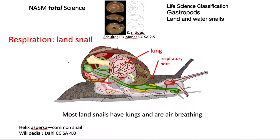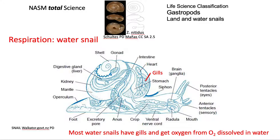For respiration in the land snail, there's a lung and a respiratory pore, and the land snails are air breathing. Some water snails that spend time in water actually have lungs and have to come to the surface for air. A lot of the water snails have gills and get oxygen that is dissolved in the water — not the O in H₂O, but oxygen that's been dissolved in the water.